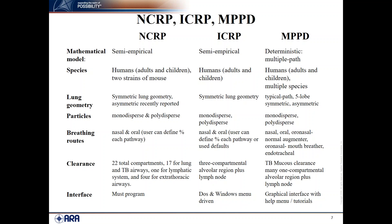For particles, all three models handle monodispersed and polydispersed aerosols. For breathing routes, ICRP and NCRP support nasal and oral, while MPPD adds oronasal, normal mouth breather, oronasal mouth breather, and endotracheal routes. For clearance, NCRP has 22 compartments (17 for TB, five for lymph node and extrathoracic), and ICRP has three compartments covering the alveolar region plus lymph nodes.